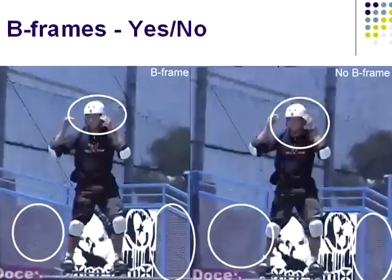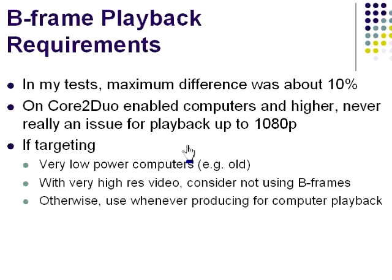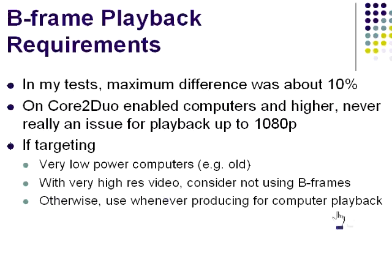What about B-frames? They definitely improve quality, as you can see in this comparison. On the left is an H.264 file encoded using B-frames, while on the right only I and P frames were used — you can see the detail preserved on the left is much greater. How much harder are files produced with B-frames to play back? In my test, the maximum difference was about 10%. On Core 2 Duo computers and higher, this was never really an issue for playback up to 1080p. If you're targeting very low-power computers with very high-res video, consider not using B-frames; otherwise, use B-frames whenever producing for computer playback.